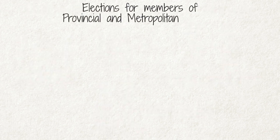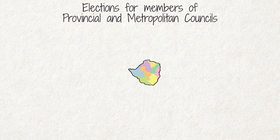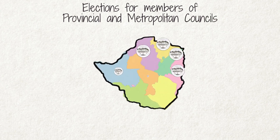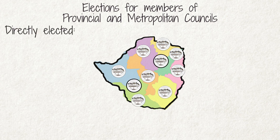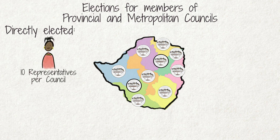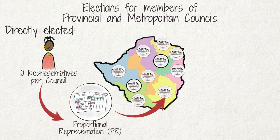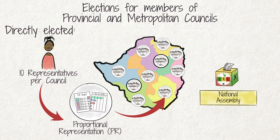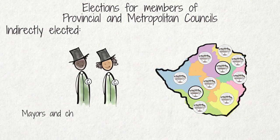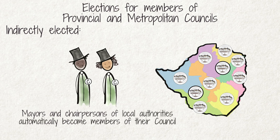For elections of members of provincial and metropolitan councils, some members are directly elected and some are indirectly elected. Ten representatives per provincial or metropolitan council are directly elected under the PR system. The outcome is calculated using the votes cast for members of the National Assembly in each province. The indirectly elected members are the mayors and chairpersons of local authorities in the province, who automatically become members of these councils.